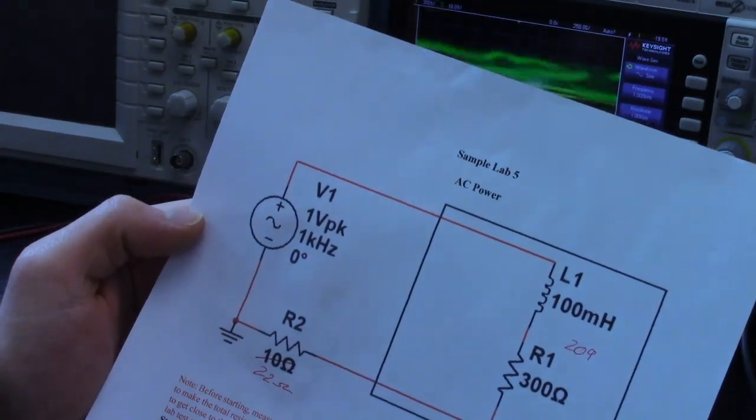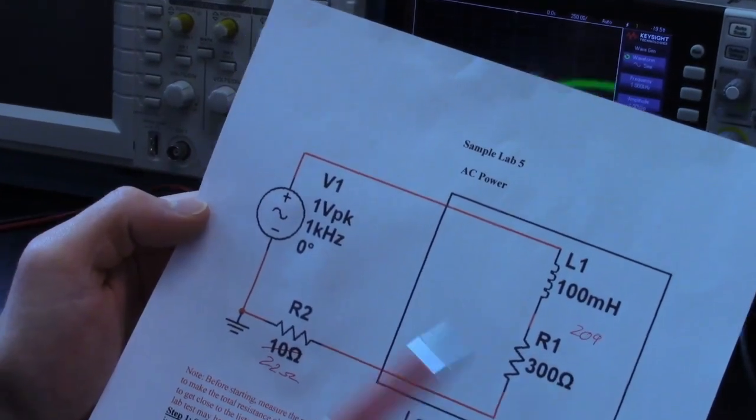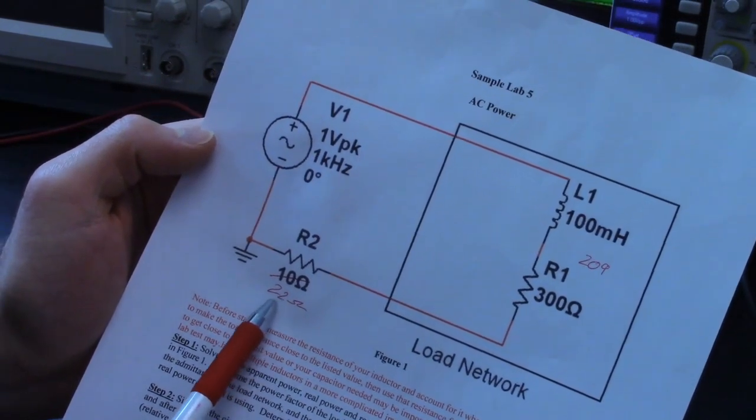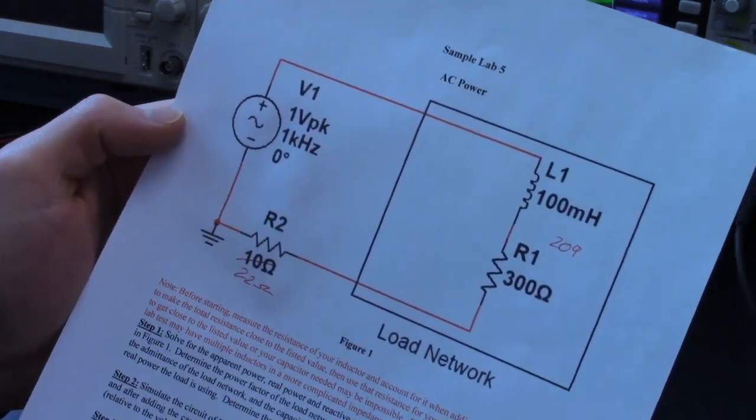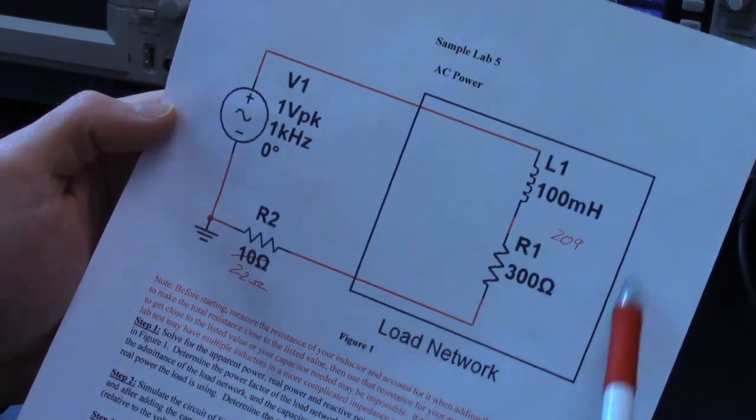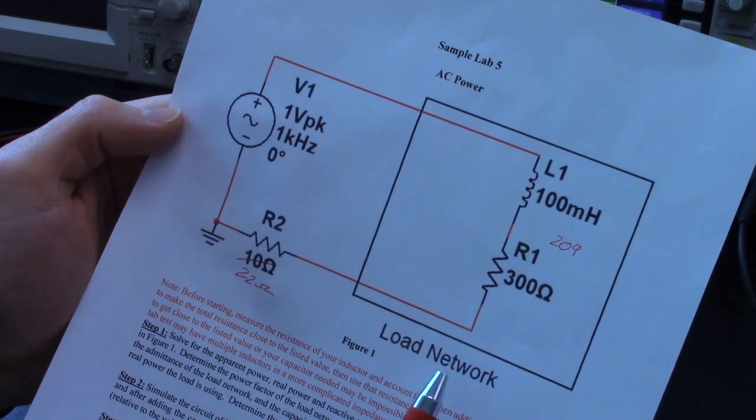Hi, this is going to be lab number five where we're looking at AC power and power factor correction. So what we're going to be doing is building this circuit here. We've got a supply, we've got a probe resistor which we're going to make 22 ohms because we don't actually have a 10 ohm, and we've got a load network over here.